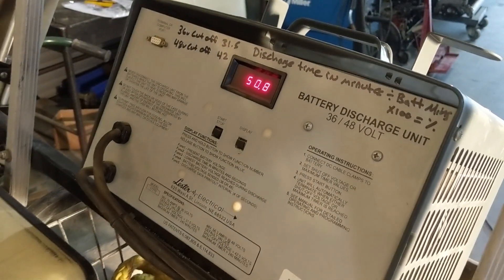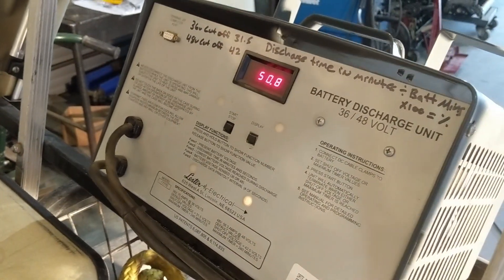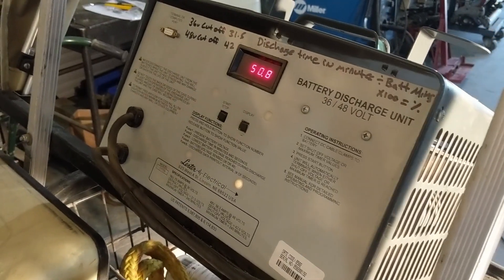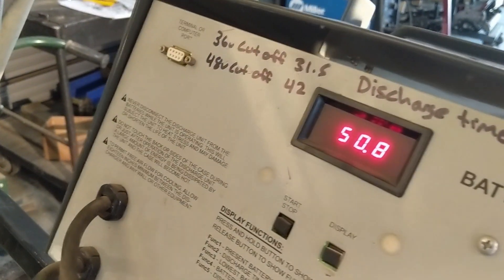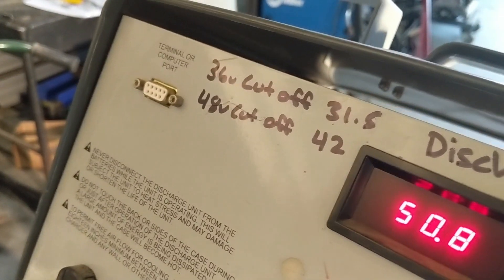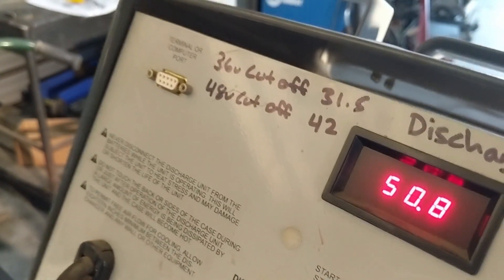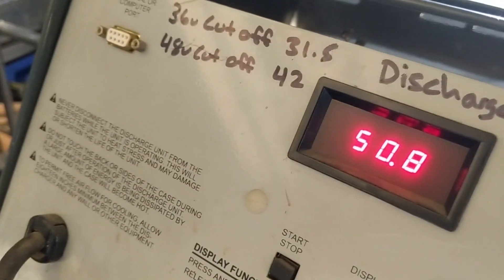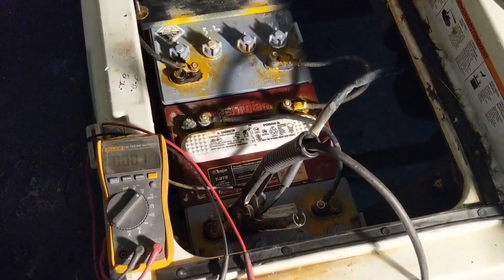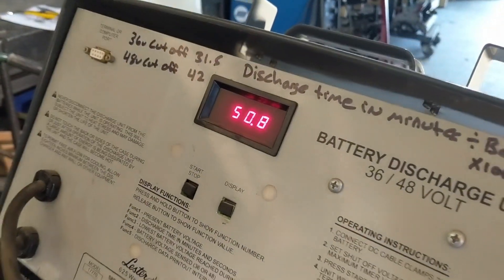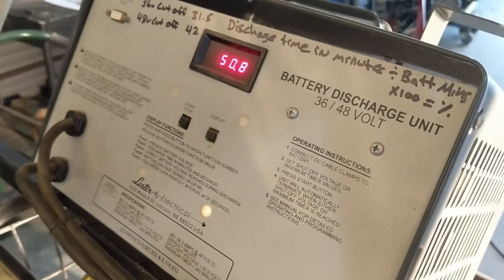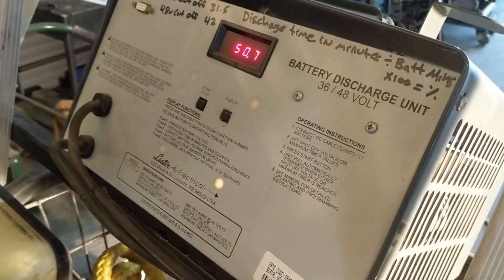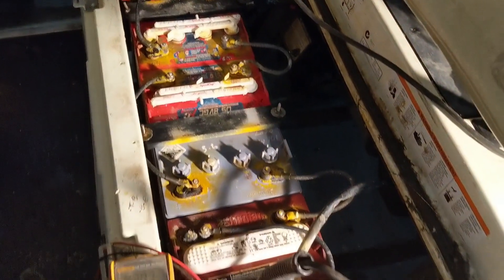If you remember from my previous video, this is my load tester. This is a Lester battery discharge unit, and what it does is it presents a load to the battery pack and drains it to cutoff voltage. We usually use 36 volt cutoff limit and also a 48 volt cutoff limit. So on the 48 volt cutoff limit, when the voltage gets down to 42 volts, this shuts off and it gives you a discharge time and tells you roughly how many percent of your battery life is gone.